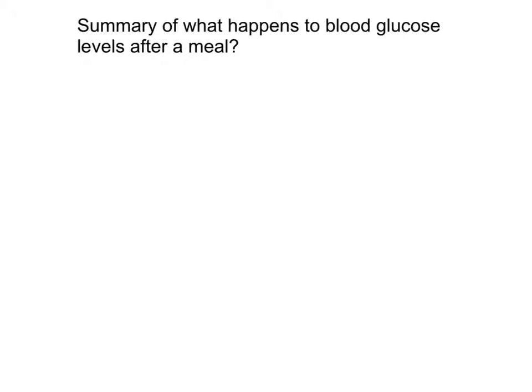This is a slightly trickier quiz. Just one question: make a summary or flow chart of what happens to blood glucose levels after a meal, referencing both insulin and glucagon as to how blood glucose levels are changing. Pause the video now — you can write it as a flow chart or bullet points, and then we'll go through the answers on the next slide.